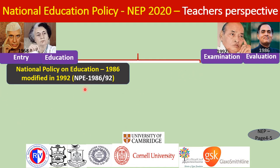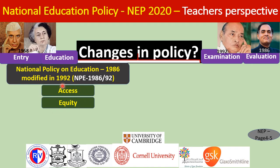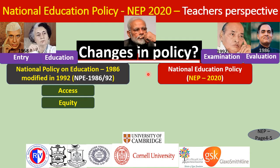The foundations of the previous National Policy on Education were access and equity — easily accessible and irrespective of caste and creed. The present policy, proposed under Narendra Modi's government, changes the name from National Policy on Education (NPE) to National Education Policy (NEP).